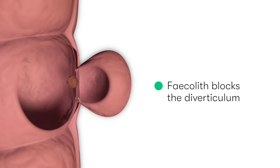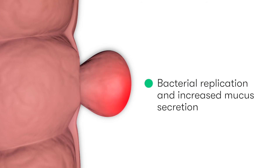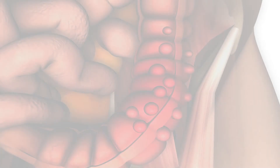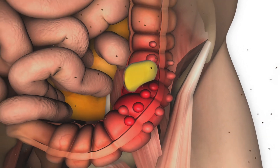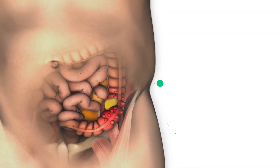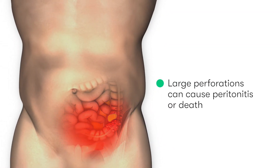This is directly relevant to what happens to cause diverticulitis. In diverticulitis, the opening of the diverticulum becomes blocked, typically by a faecolith as we can see here. Subsequently, this obstruction of the diverticulum lumen leads to replication of bacteria and increased mucus secretions within the diverticulum itself. However, in cases where the perforation is large, this usually results in the development of pericolic or pelvic abscesses, or in the most severe cases, can lead to peritonitis and death.